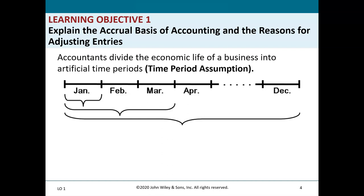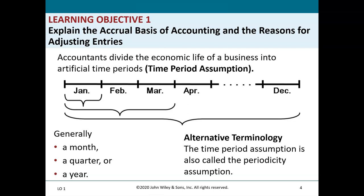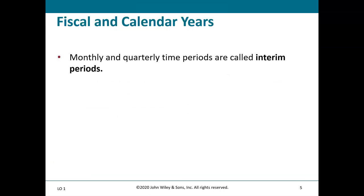To talk about accruals and deferrals, the first thing we need to understand is that accountants divide the economic life of a business into artificial time periods — this is called the time period assumption. The typical time periods are a month, a quarter, or a year. This is also called the periodicity assumption. Monthly and quarterly time periods are called interim periods.